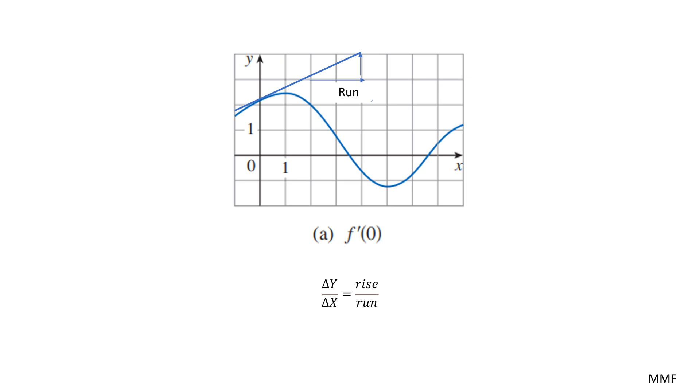One going roughly the length, or the run, and one going the rise. You can see the run is about two boxes, and the rise appears to be about one box. Therefore, we can say that delta y over delta x is about 1/2, or 0.5.